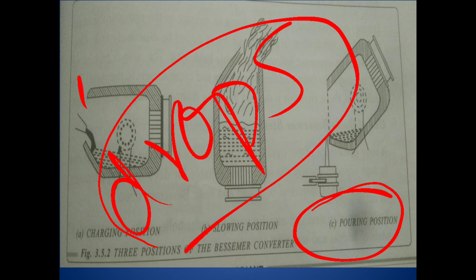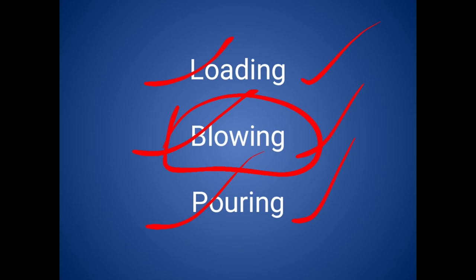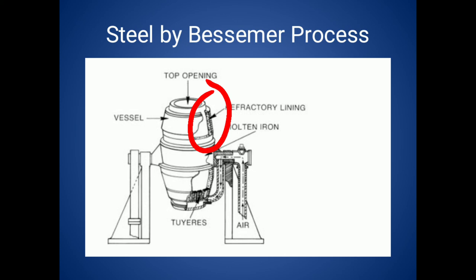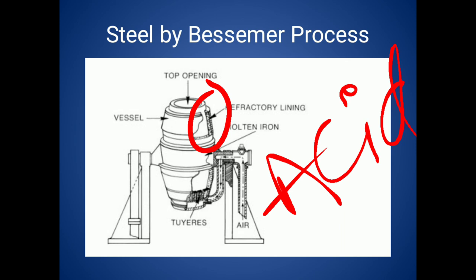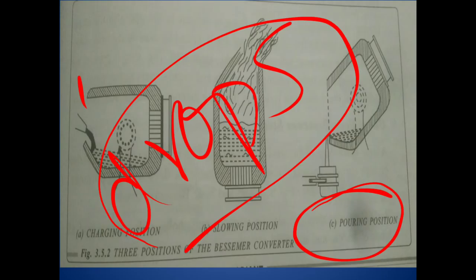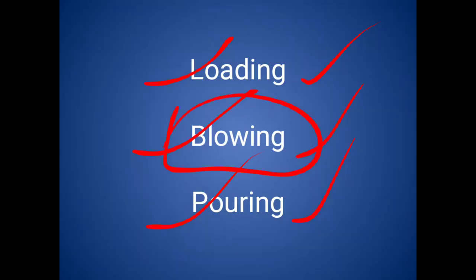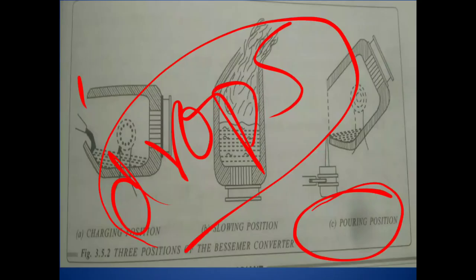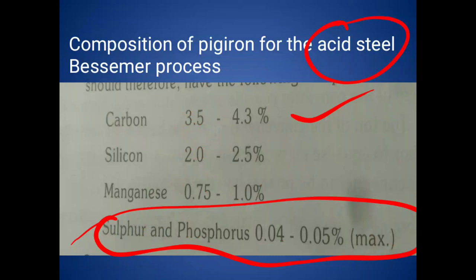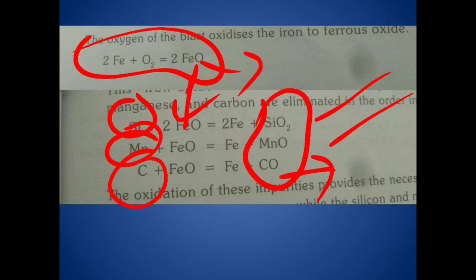This is the general operation of the Bessemer converter — the acid Bessemer converter. It is called acid Bessemer because the refractory lining of the converter is acid-based. If only basic material is used for lining, it is called the basic Bessemer process. In the third stage, as mentioned earlier, we add materials like manganese, carbon percentage, and silicon to increase the strength of the steel — this is the general basic Bessemer process.